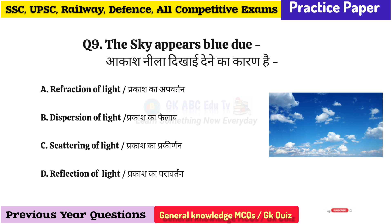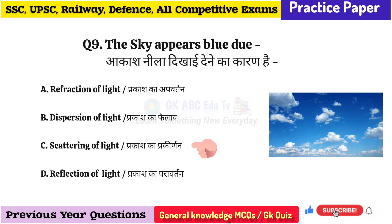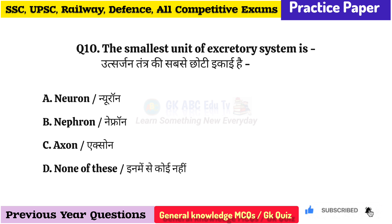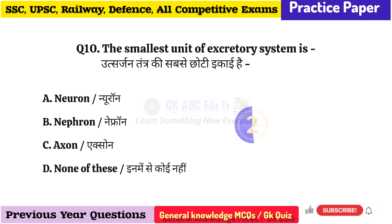Question: The sky appears blue due to? Answer: Scattering of light. Question: What is the smallest unit of the excretory system? Answer: Nephron.